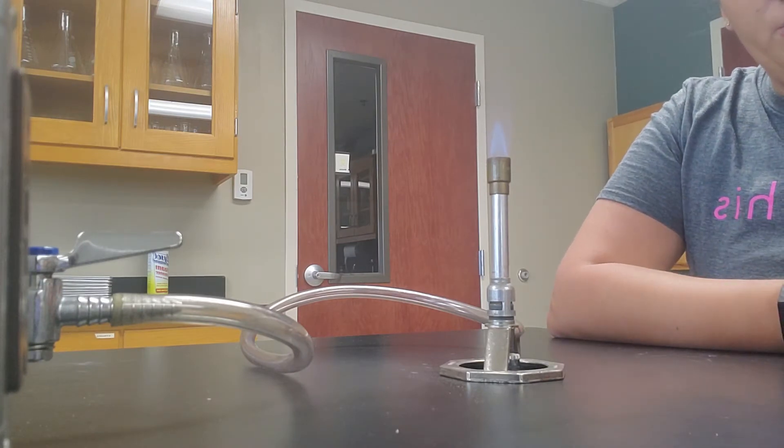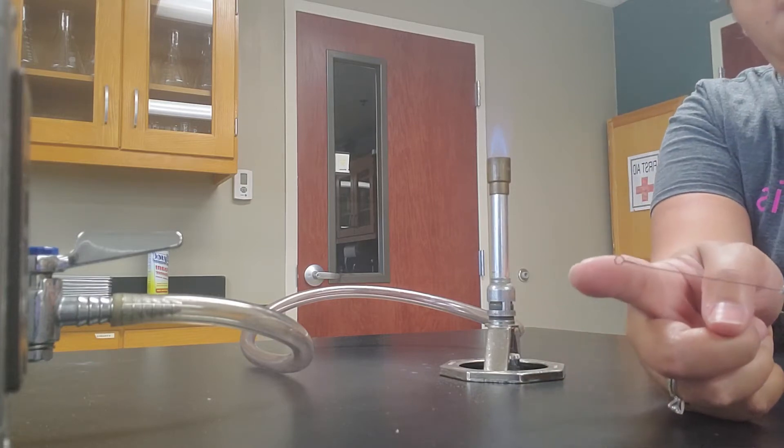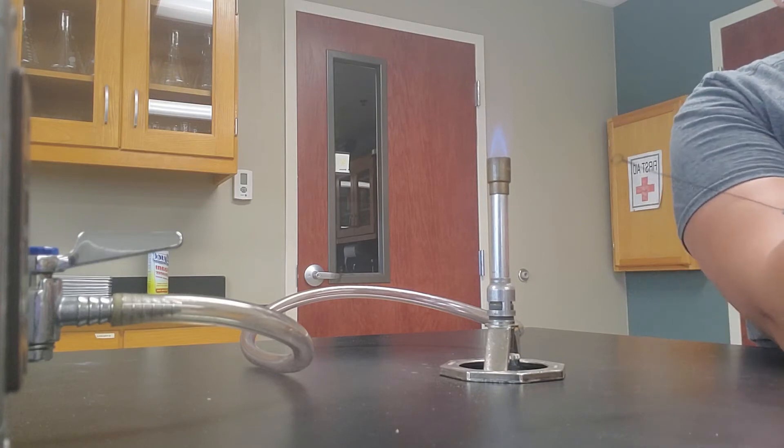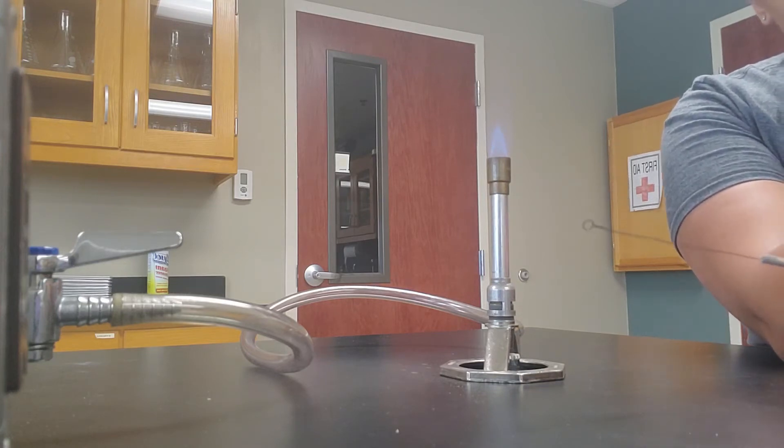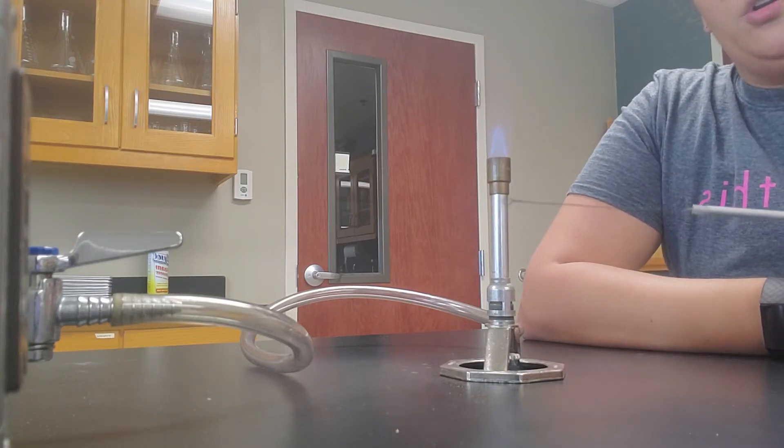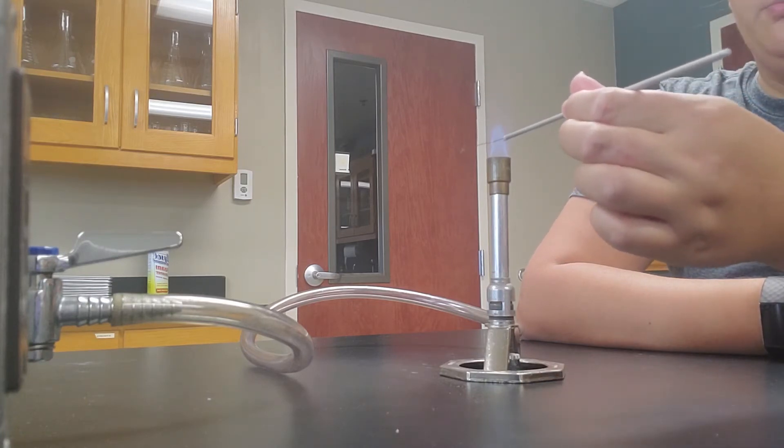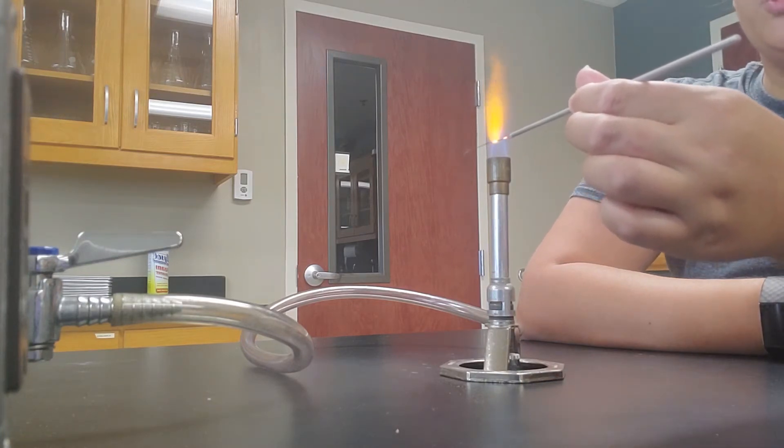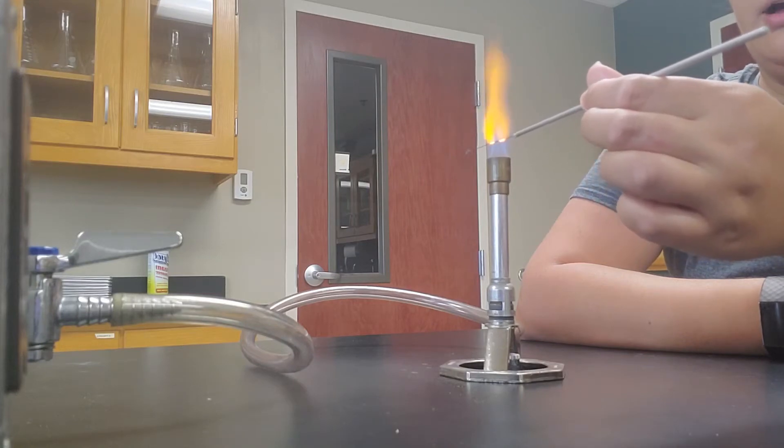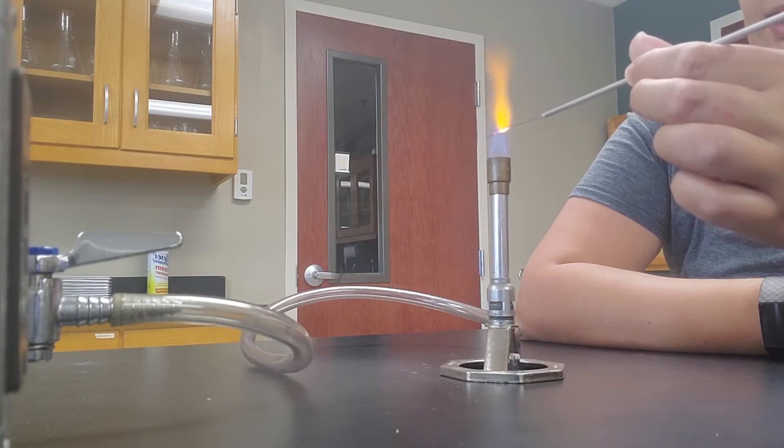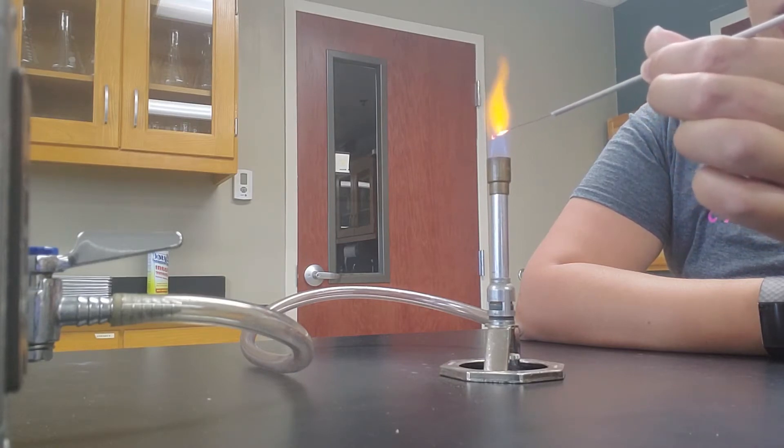We also have inoculating loops. So the inoculating loops here, basically they're a little round thing at the tip. So whenever you do aseptic technique, you want to make sure that you're transferring things without contamination. So the first thing you want to do is actually flame your loop. And you start kind of at the base and move toward the loop, and you'll notice it gets kind of that hot, really hot color, that kind of orange color. And you want to do that all the way to the tip.